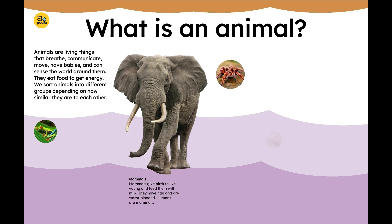Mammals. Mammals give birth to live young and feed them with milk. They have hair and are warm-blooded. Humans are mammals.